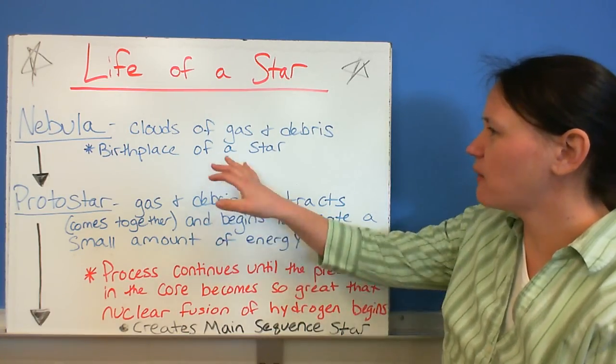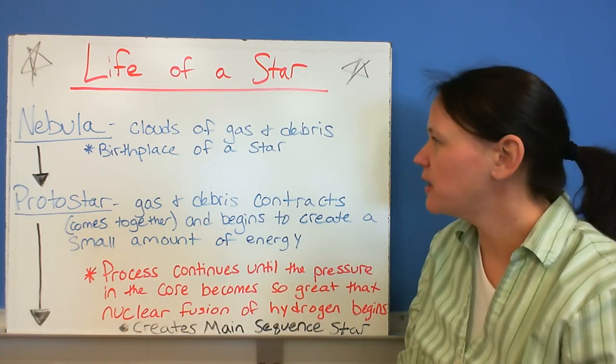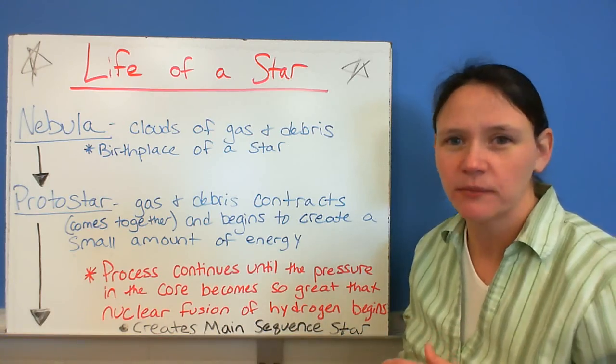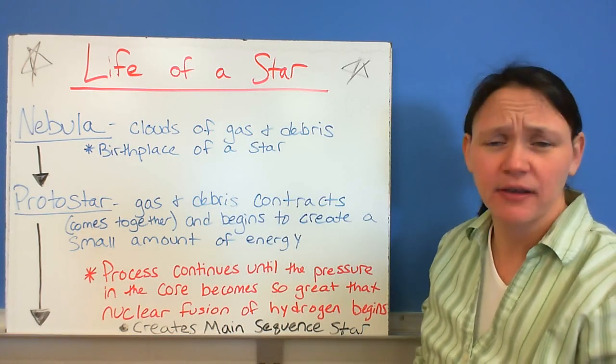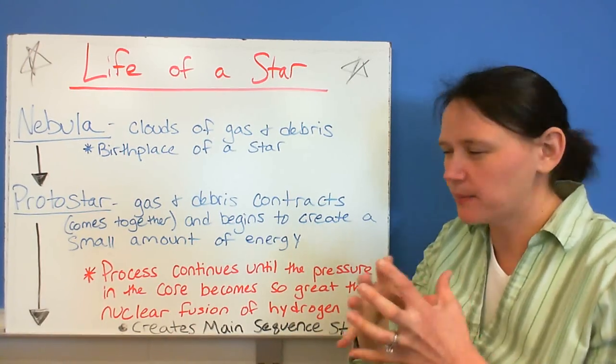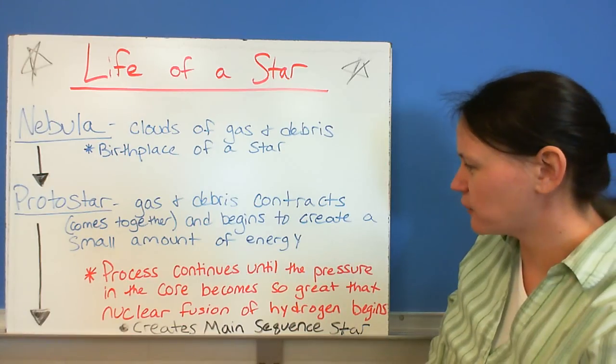Stars basically start out in a nebula, which is a cloud of gas and debris, and it's where the star forms. And over time, that gas and debris starts to contract or come together, and it forms a little bit of energy.